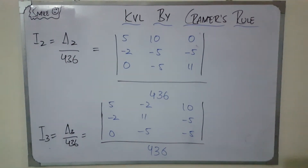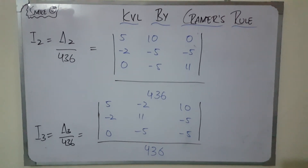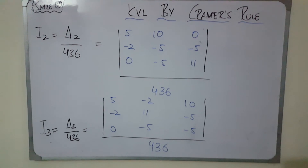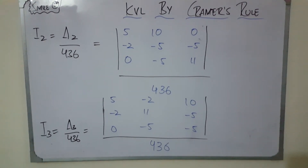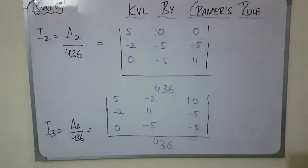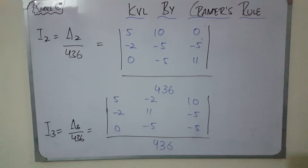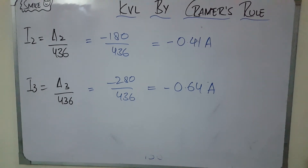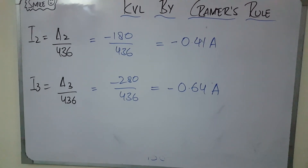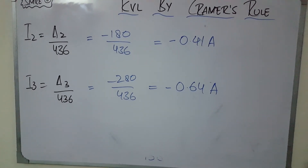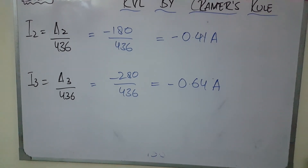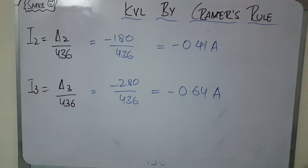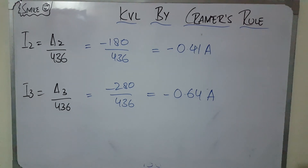For I2 and I3, Delta-two is found by replacing the second column and Delta-three by replacing the third column of the matrix with the voltage column ten, minus five, minus five. Solving these matrices and dividing by 436: Delta-two equals minus 180, giving I2 equals minus 0.41 amperes; and Delta-three equals minus 20, giving I3 equals minus 0.64 amperes. Thank you for watching, please subscribe.